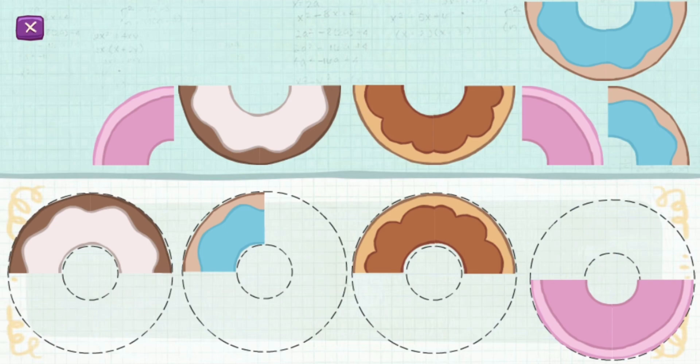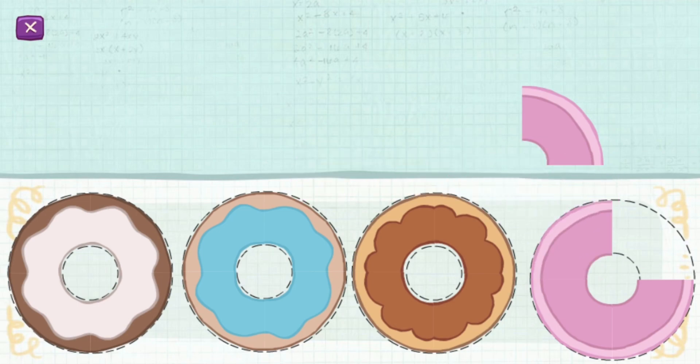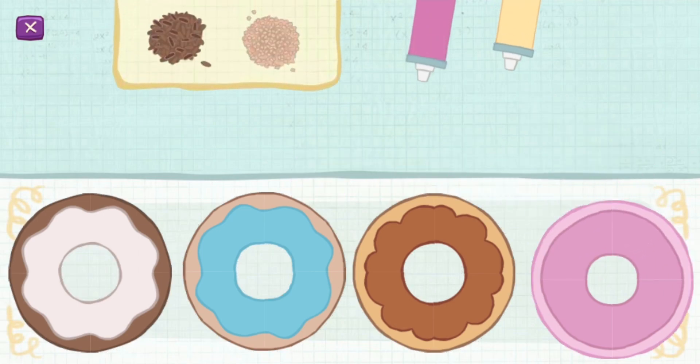Put the donut pieces back together. Those two half donuts made one whole donut. You fixed the donuts! Hooray! Now decorate them any way you want.